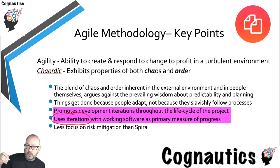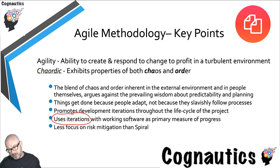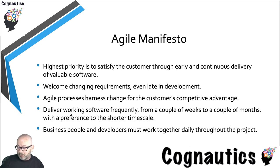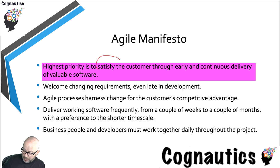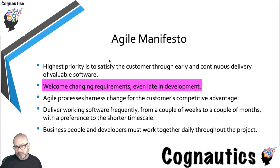You make version one, then version two which is better than version one, then version three, and by the time you get to a later version you've got something approximating what the customer wants. One difference between the agile methodology and the spiral is there's less focus on risk mitigation in agile. This is all about satisfying the customer — that is the key aim of the agile manifesto — welcoming changing requirements from customers, even late in the day.